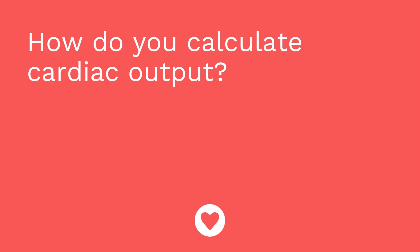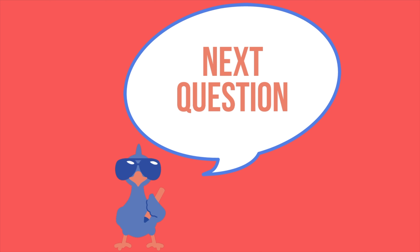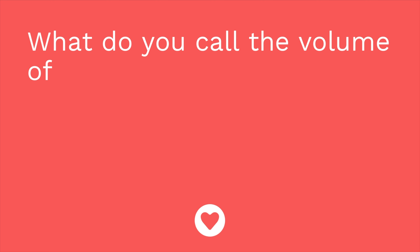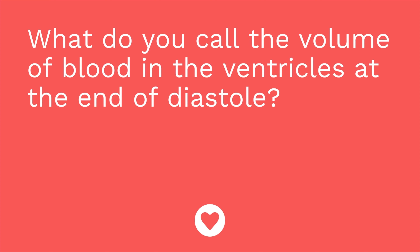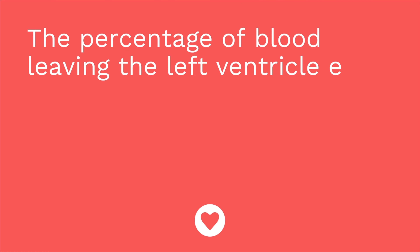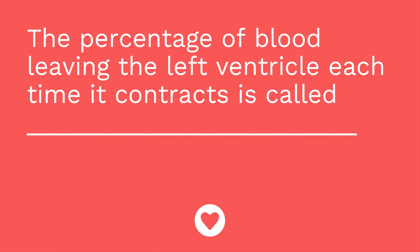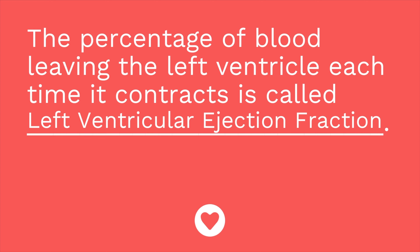Time for a quiz — three questions. First: how do you calculate cardiac output? You calculate cardiac output by taking heart rate times stroke volume. Second: what do you call the volume of blood in the ventricles at the end of diastole? The answer is preload. Third: the percentage of blood leaving the left ventricle each time it contracts is called what? If you said left ventricular ejection fraction, you are right.